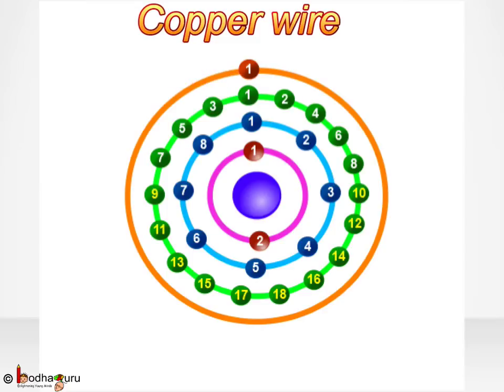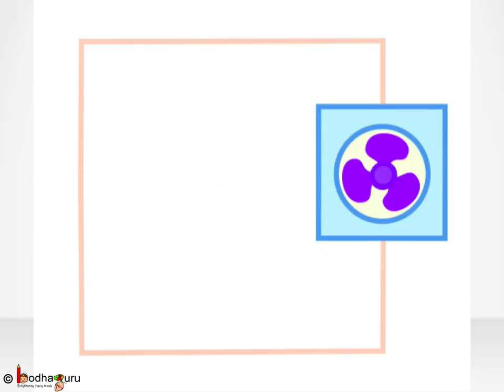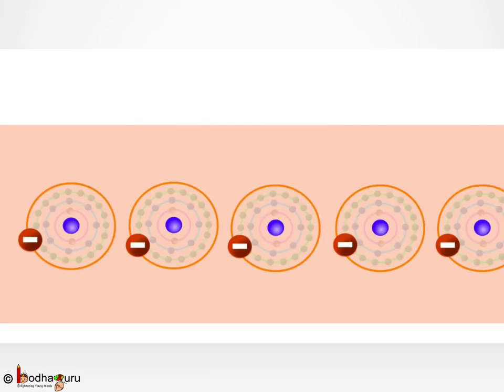Now let us take two wires and attach one end of each copper wire to the motor. Does it work? No, because nothing has changed. All the atoms in the copper wire are still in the neutral state.